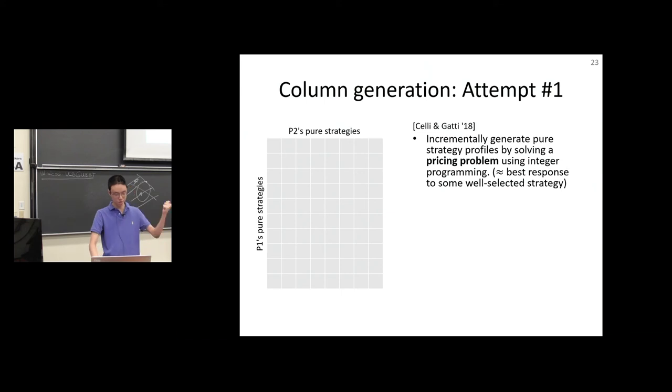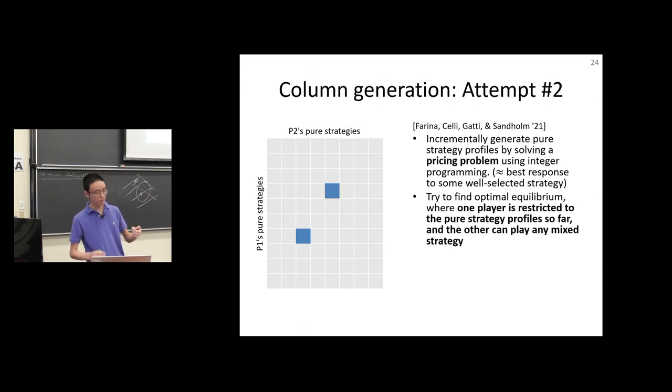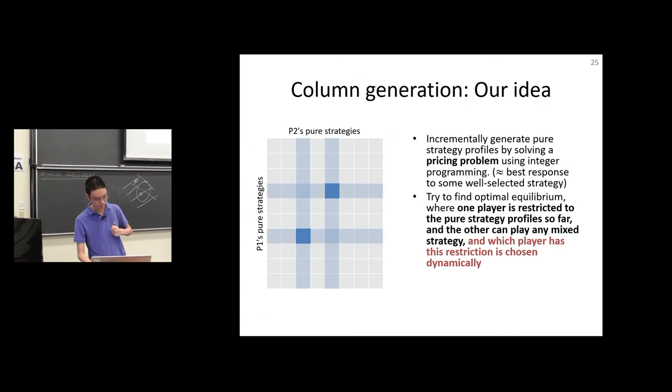The first attempt at column generation is to add strategy profiles one by one. We're only allowed to mix between these strategy profiles. That's quite restrictive. The second attempt is to say one of these players is going to be allowed to mix arbitrarily. The other player has to choose a pure profile. What we do is build upon this. We say not only can one player do this, we're going to allow both players to do this, and we're going to dynamically pick which one is playing the pure strategy and which one is mixing. In other words, not only do we get the column, we also get the row. This creates a much tighter program, and tighter programs mean faster convergence for column generation.